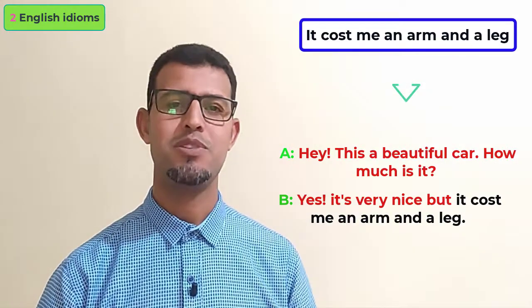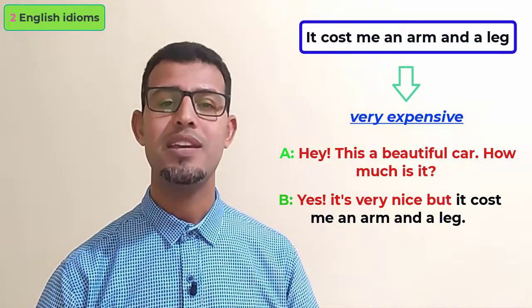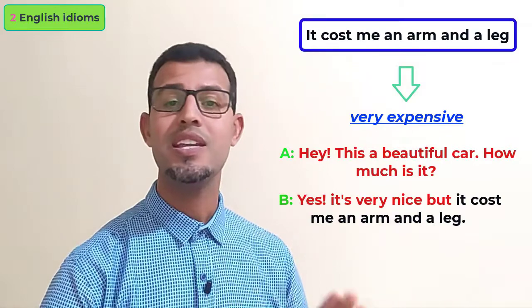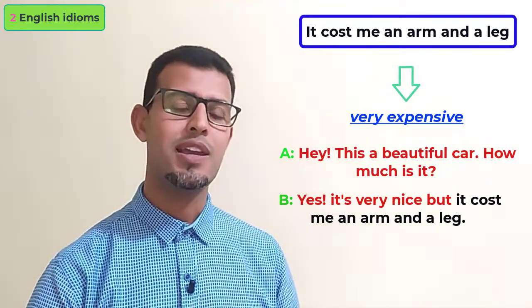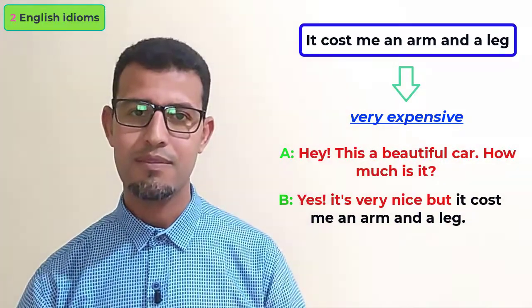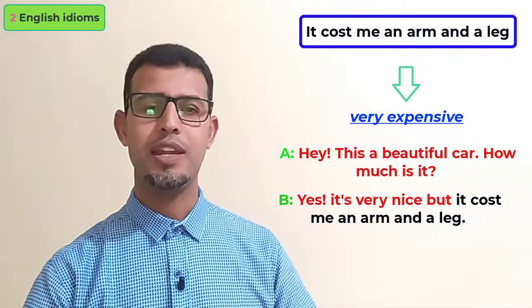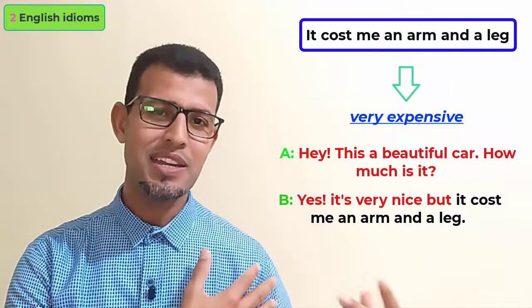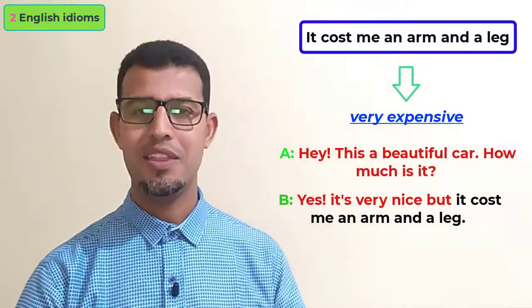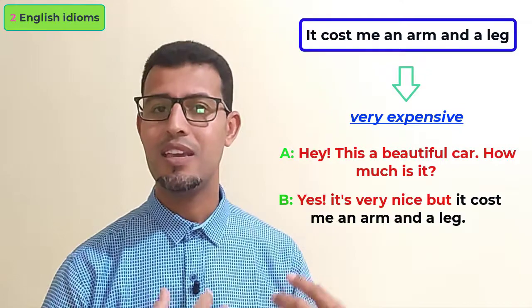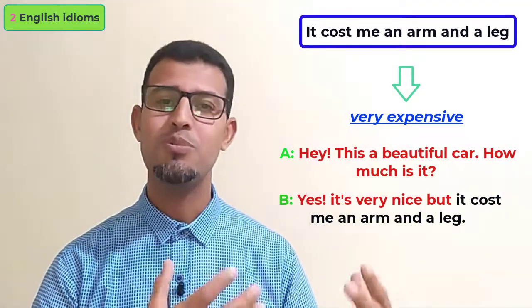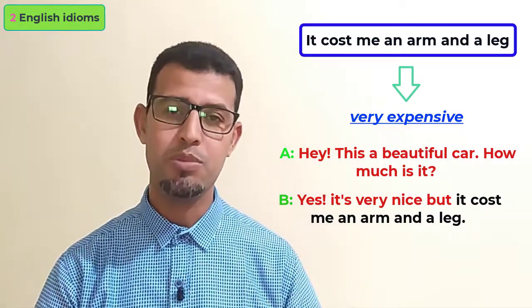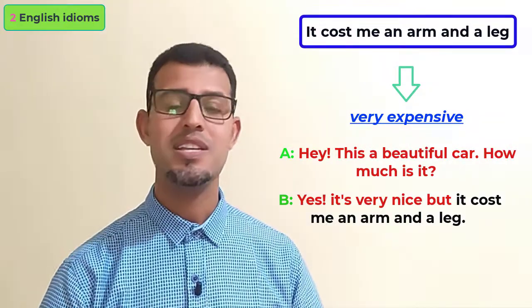The meaning of this idiomatic expression is that it's very expensive. When you say 'this thing costs me an arm and a leg,' it means it's very expensive. From the literal meaning, it means I gave my arm and my leg to buy this car — something very precious and valuable — so it means it's very expensive.